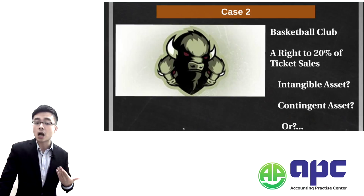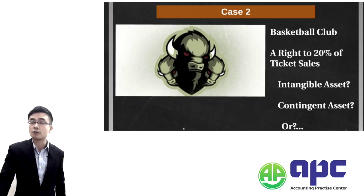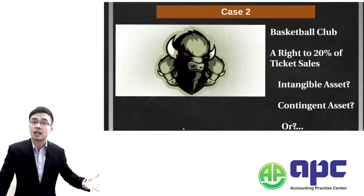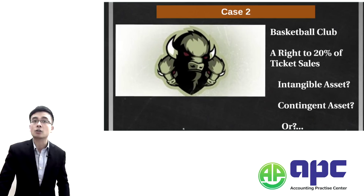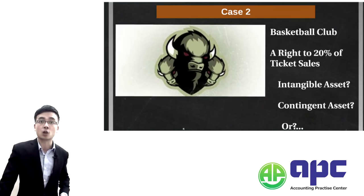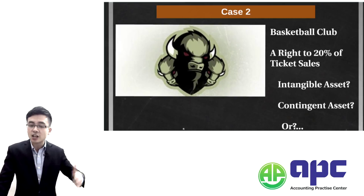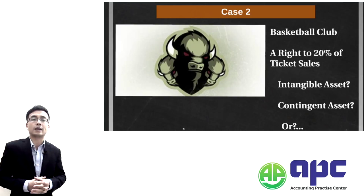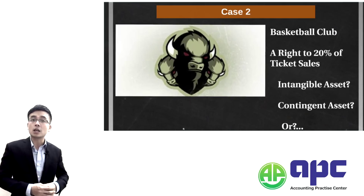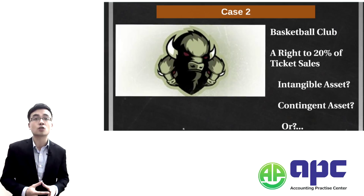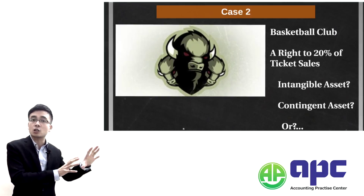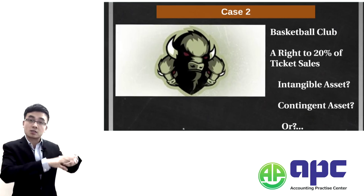If we were to use that right, we cannot guarantee future economic benefit will flow into the entity, because we are only entitled to 20% of those ticket sales. We can't guarantee they can sell tickets to customers because we haven't got the right to govern their decision-making process — for example, how they set the ticket price, whether $5 or $500 or $5,000. It's entirely up to the basketball club.